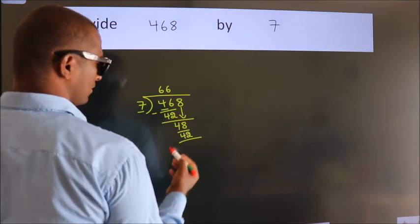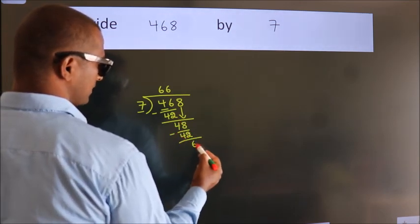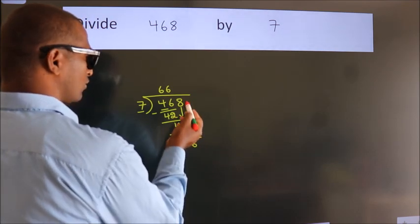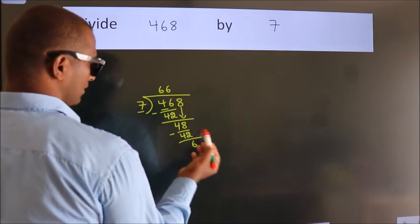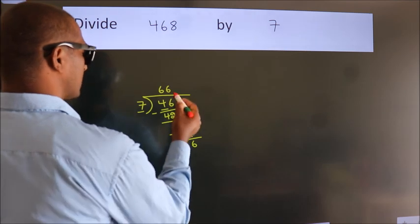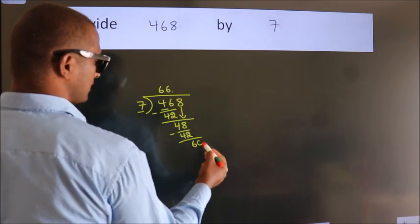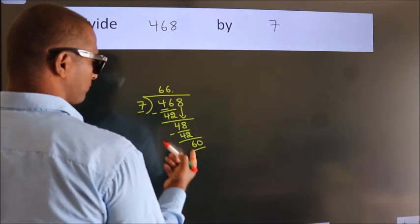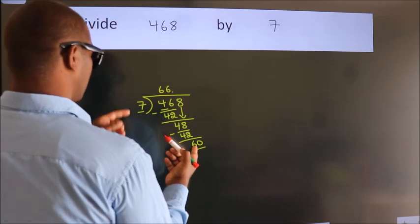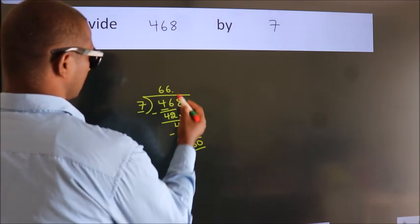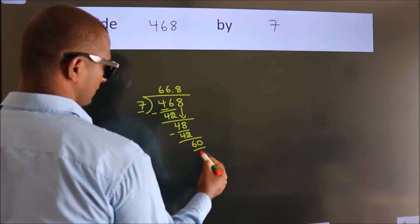Now we should subtract. We get 6. After this, no more numbers to bring down. So what we do is, we put a dot and take 0. So, 60. A number close to 60 in the 7 table is 7 times 8, 56.